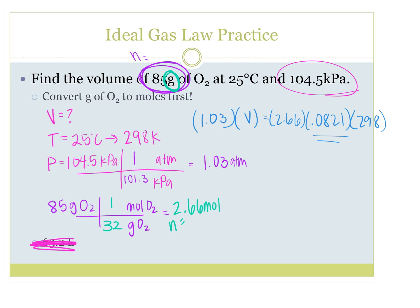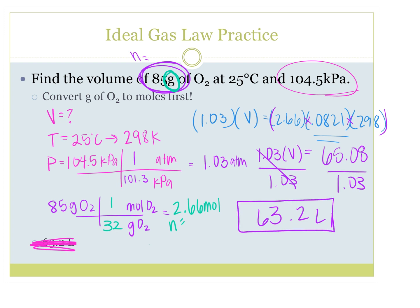So if I want to get V by itself, I'm going to multiply this whole side. That whole side gets multiplied together. So let's go ahead and do that. And I got 65.08 on the right side. That equals 1.03 times V. So to get V by itself, what can we do? Divide. Divide by 1.03 on both sides. And we get 63.2. And it's volume. So what would our final unit be on that? Liters.